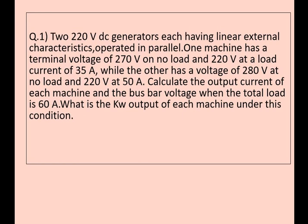While the other has a voltage of 280 volt at no load and 220 volt at 50 ampere. Calculate the output current of each machine and the bus bar voltage when the total load is 60 ampere. What is the kilowatt output of each machine under this condition?